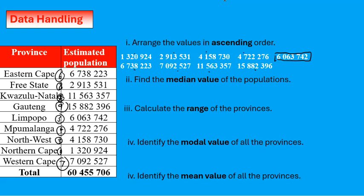The median value is six million, sixty-three thousand, seven hundred and forty-two. In some exam questions they will ask you for the province that represents that number, so in this case that province would be Limpopo.